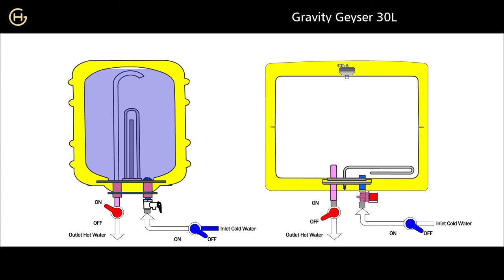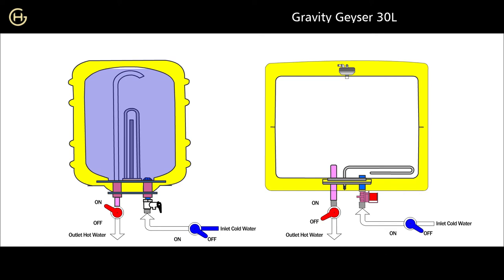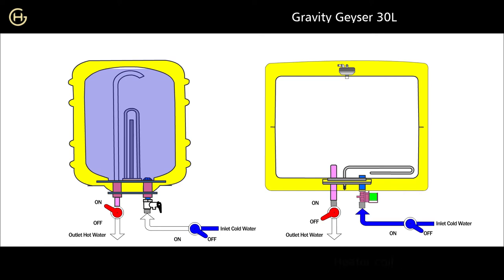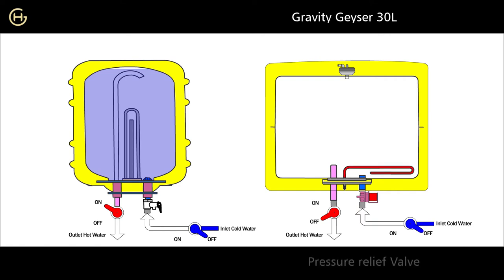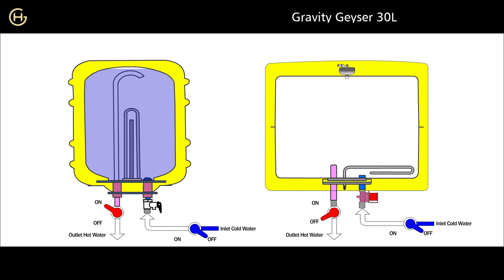Our gravity storage geyser uses cold water isolation and pressure relief valve technology. There is a solenoid valve at the cold water inlet pipe, an L-shaped heater coil mounted at the bottom, a pressure relief valve at the top, and a hot water outlet pipe.